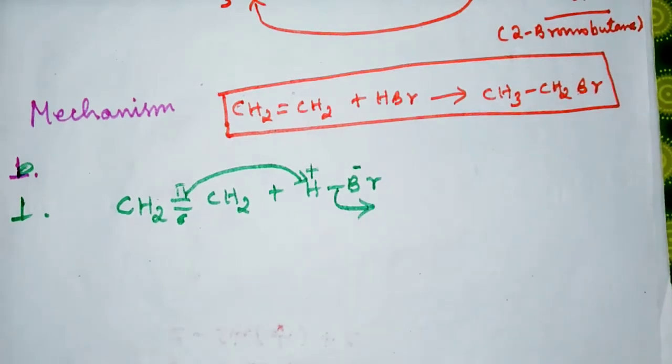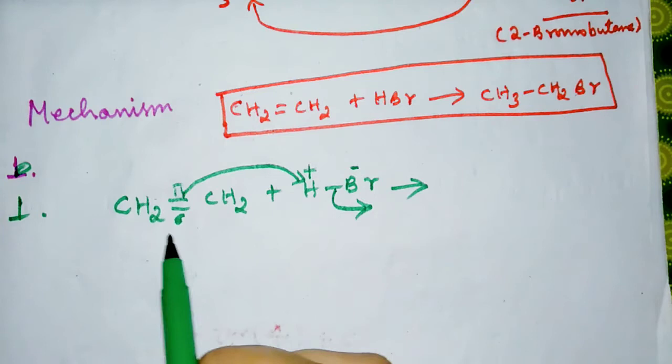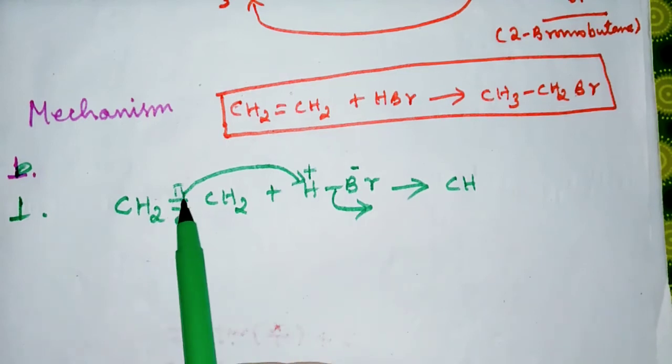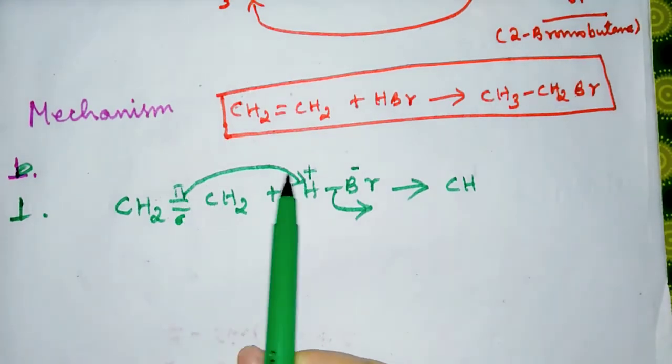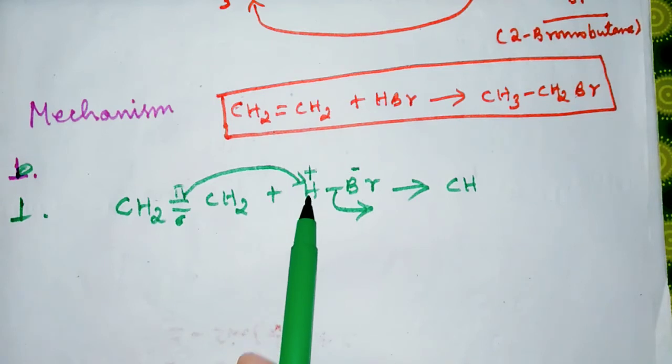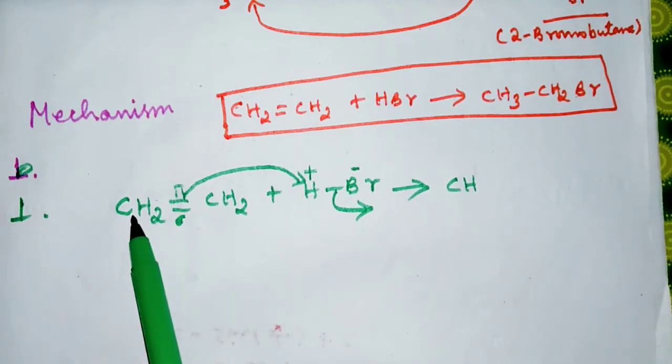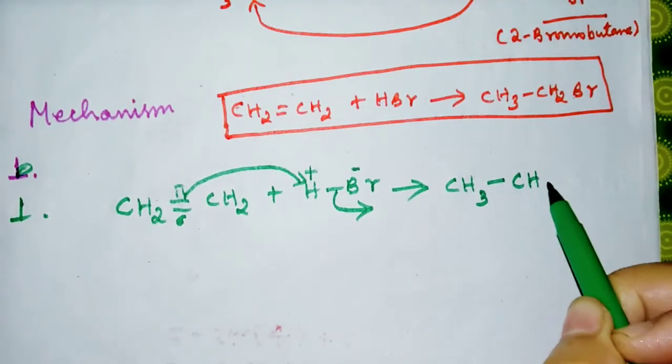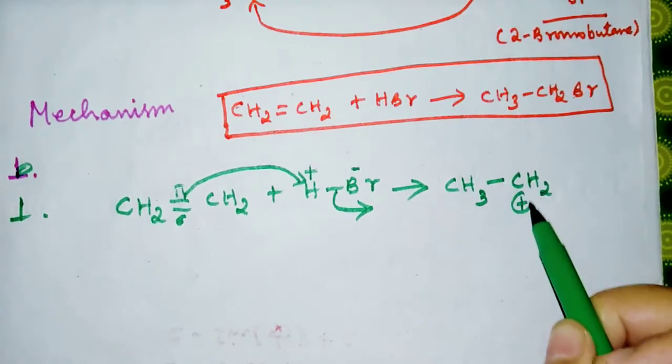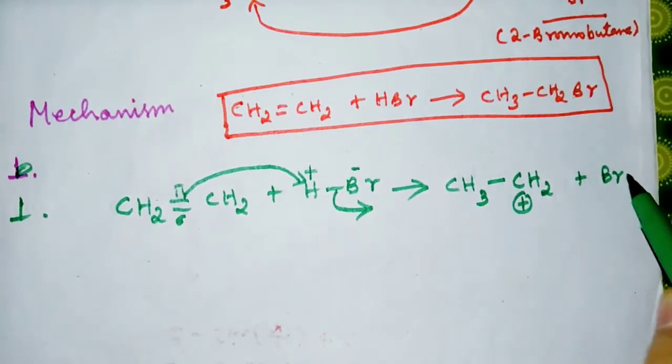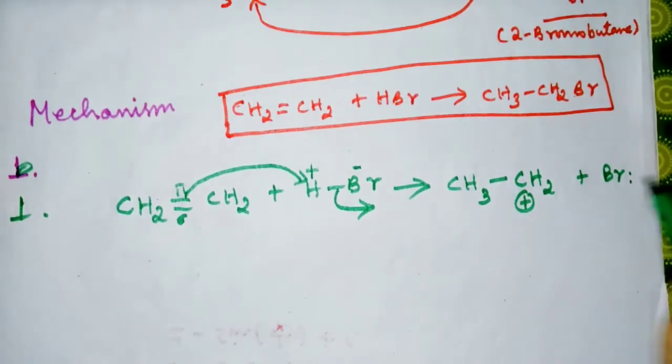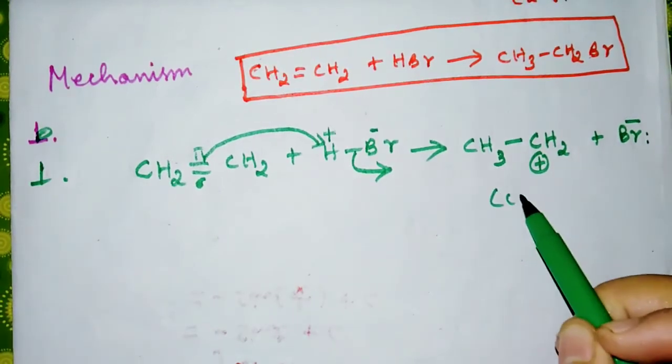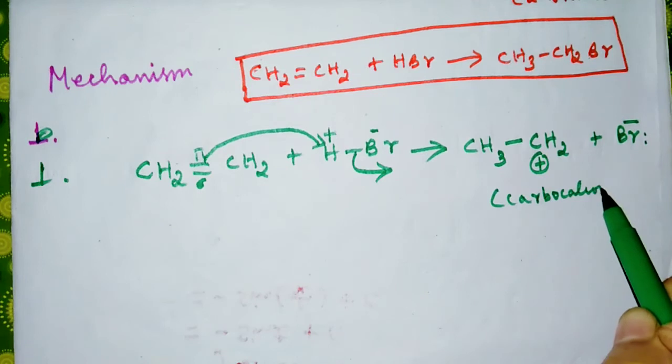So what do we have? We have CH2-CH2. One electron is given to H+, and this has gained an electron so it has formed a bond with carbon. So we have CH3, but here we have a positive sign, and then we have Br-. This is your carbocation. A carbocation is a species which is deficient in electrons.